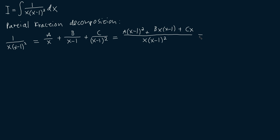In the numerator, our highest term will be x squared, and its coefficient will be A plus B. Then the x term will have the coefficient of minus 2A from the x-1 squared part, minus B from the minus 1 times Bx part, plus C from the Cx part — so minus 2A minus B plus C. And then our constant term will be just A, and everything still divided by x times x-1 squared.